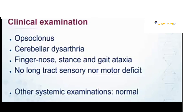This is called opsoclonus — a rare type of eye movement disorder. Along with opsoclonus, the patient had cerebellar dysarthria with scanning speech, stance-and-gait ataxia, and finger-nose ataxia. There was no long-tract sensory or motor deficit. Other examinations were normal.